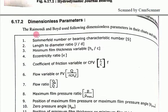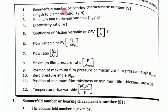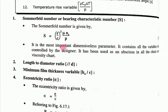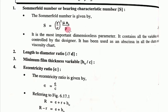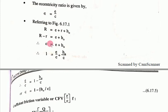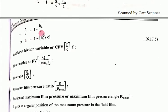The dimensionless parameters used by Raimondi and Boyd in their charts and tables are: first, the Sommerfeld number or bearing characteristics number S = (R/C)² × (µNs/P); second, L/D ratio (infinite, one, one-half, one-fourth); third, minimum film thickness variable Ho/C; and fourth, eccentricity ratio e = small e/C, where e = 1 − Ho/C.